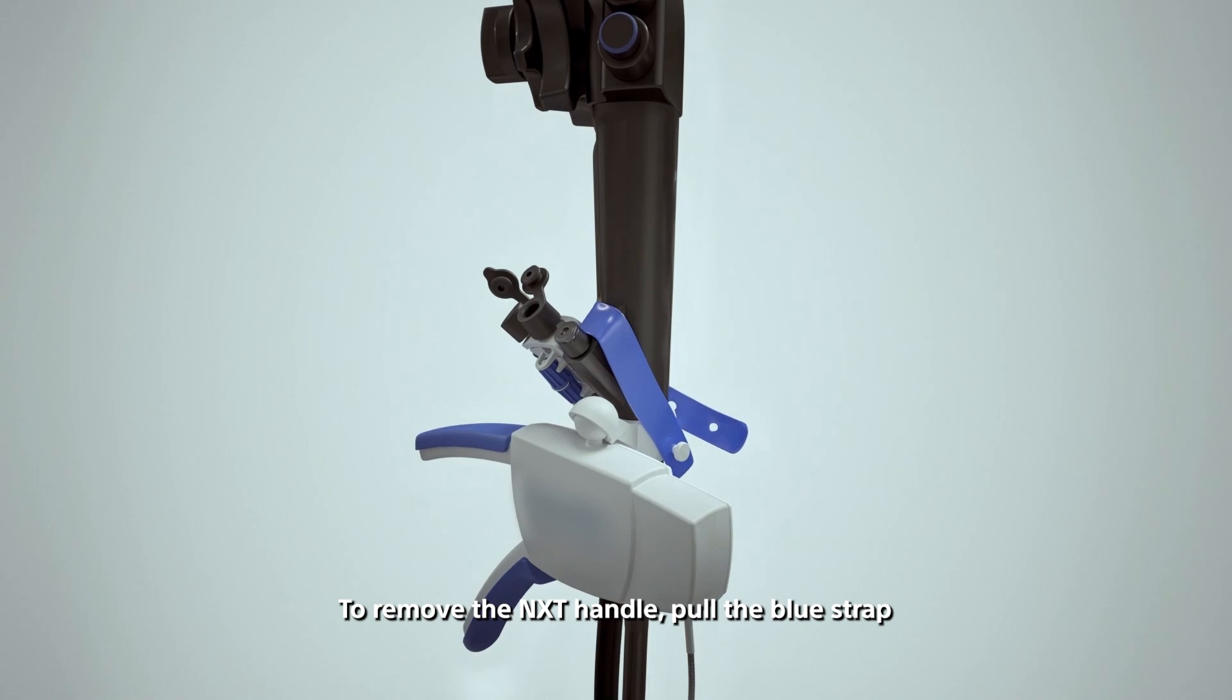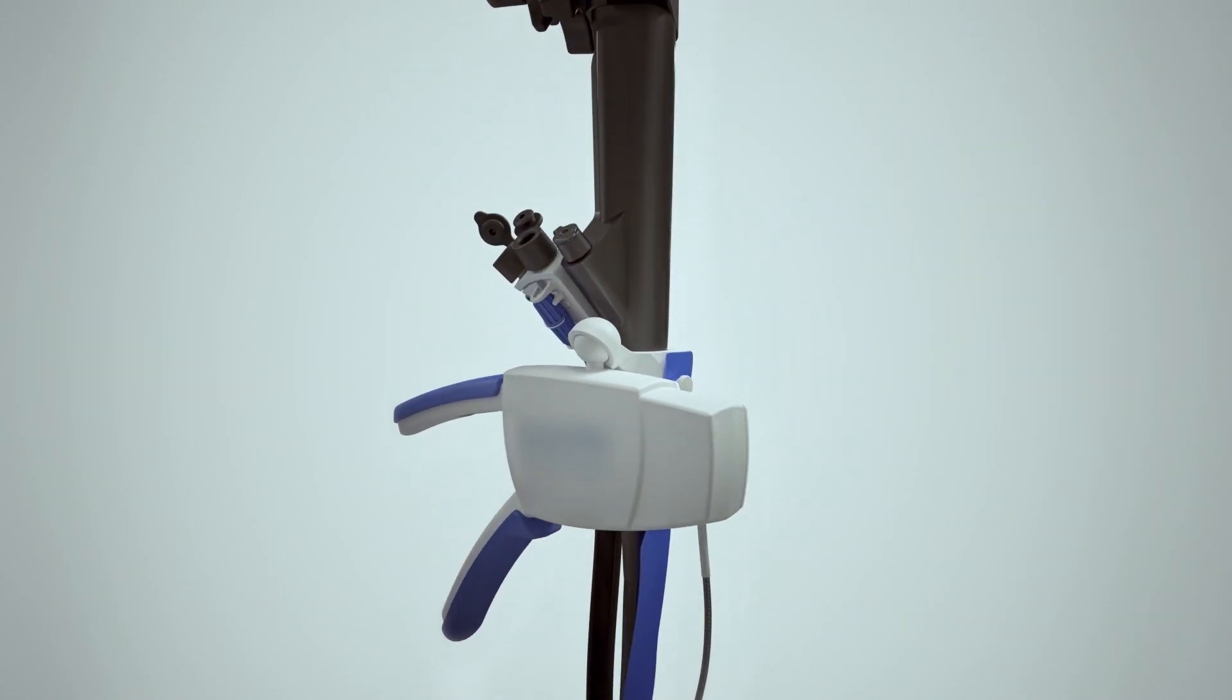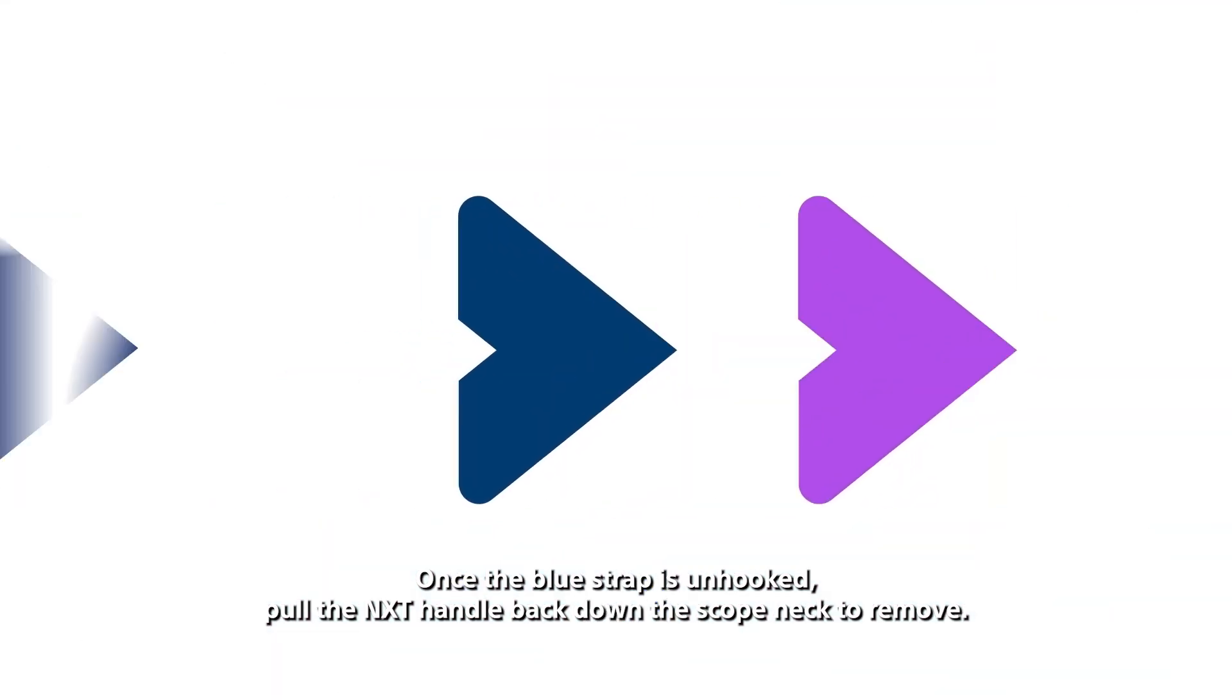To remove the NXT handle, pull the blue strap away from the scope to release and unwind from the scope. Once the blue strap is unhooked, pull the NXT handle back down the scope neck to remove.